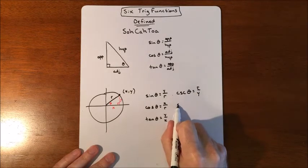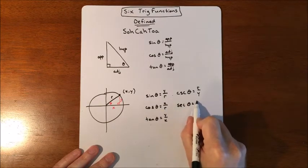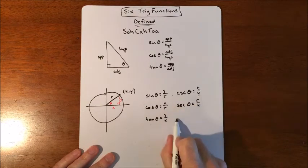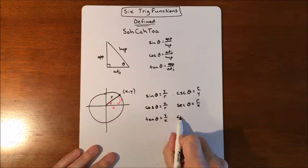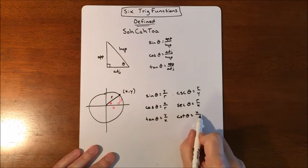And cosine has a reciprocal of secant, and it is r over x. And then tangent has a reciprocal called cotangent, which is x over y.